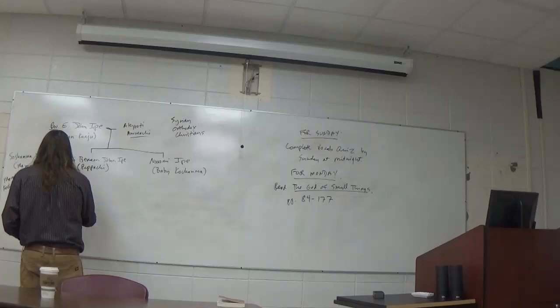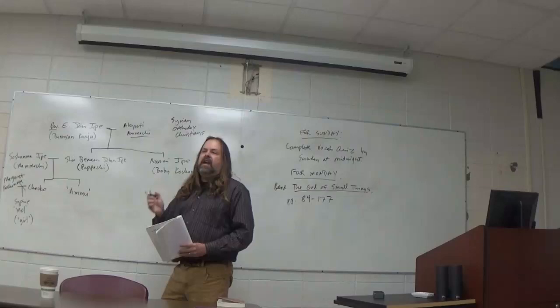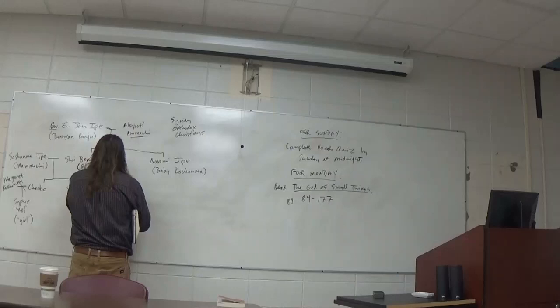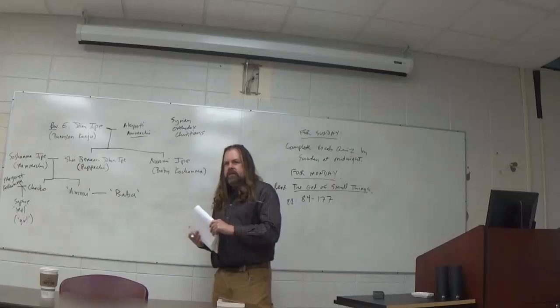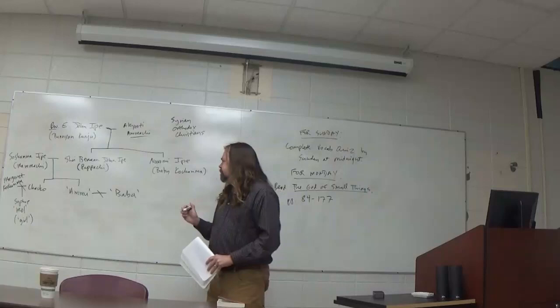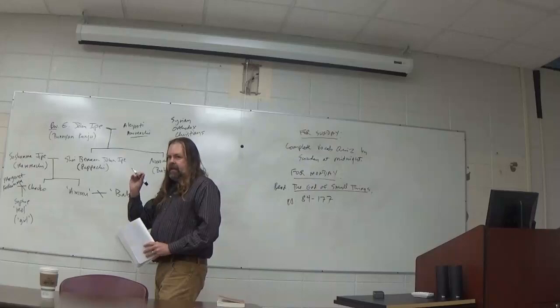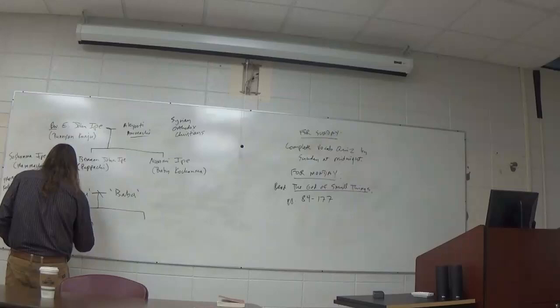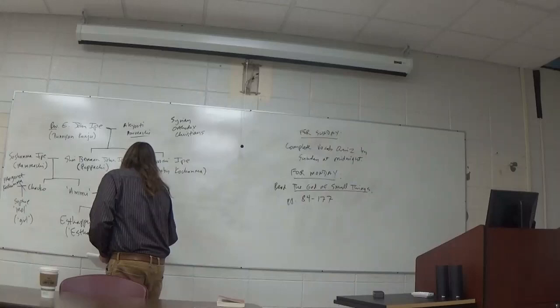And then their other child is referred to solely as Amu. This is not her name. This is just a word that means mother. And Amu is married to Baba, or was married to Baba. They're also divorced. And Baba simply means father. Neither of these characters are given names. And their children are the fraternal twins, Esthapen, or Estha, and Rahel,